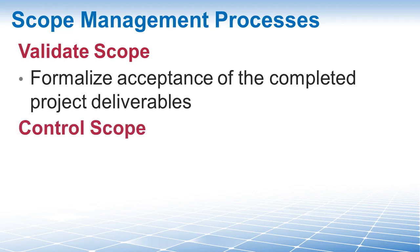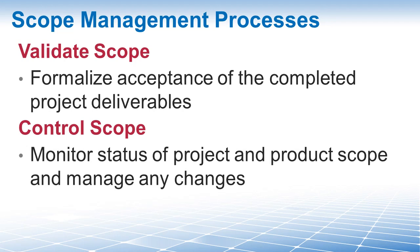And finally, Control Scope — the process of monitoring the status of the project and product scope and managing changes to the scope baseline. Scope creep happens when you have uncontrolled changes that can wreak havoc on an otherwise well-planned project. Your scope baseline provides a tool to compare actual results and determine if preventative or corrective action is needed. Control scope includes analyzing scope performance, reviewing change requests according to the perform integrated change control process, and updating the project management plan and other project documents. In other words, control scope helps you manage the processes you're utilizing to keep the project running smoothly.